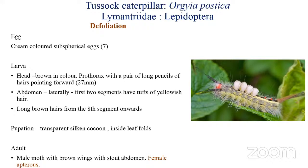You can observe a tuft of yellowish hairs laterally on the first two abdominal segments, yellowish tufts of hairs dorsally on the first four abdominal segments, and long brown hairs dorsally from the eighth abdominal segment. The pest pupates in a transparent silken cocoon formed inside the leaf fold. The male has brownish wings, but the female is apterous — this is a peculiar characteristic of this pest.